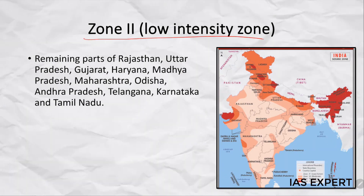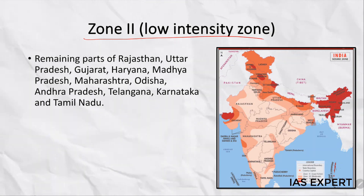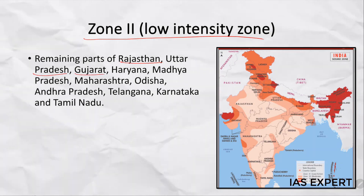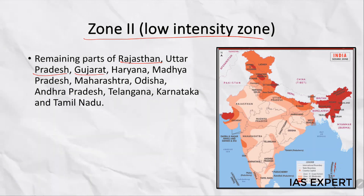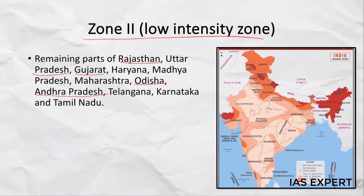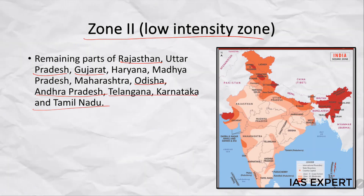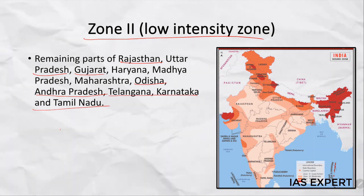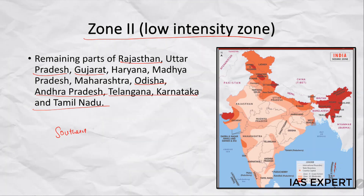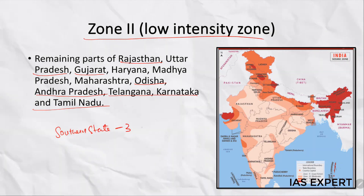Coming to Zone 2 — the low intensity zone. This includes remaining parts of Rajasthan, Uttar Pradesh, Gujarat, Haryana, Madhya Pradesh, Maharashtra, Odisha, Andhra Pradesh, Telangana, Karnataka, and Tamil Nadu. Most of the southern states fall under Zone 3 and Zone 2.